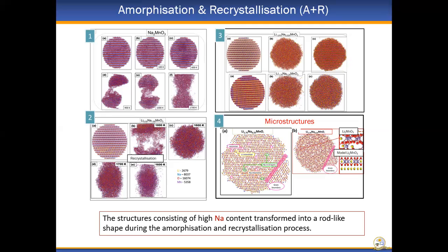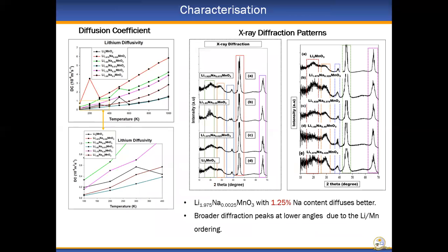In figure four, the microstructures for the system containing 12.5% sodium reveal the presence of vacancies, grain boundaries, and also the presence of the layered Li2-MnO3 phase. The diffusion coefficient plot shows that lithium diffusivity is affected by the amount of sodium in the system. As the sodium content was increased, the diffusion coefficient decreased.